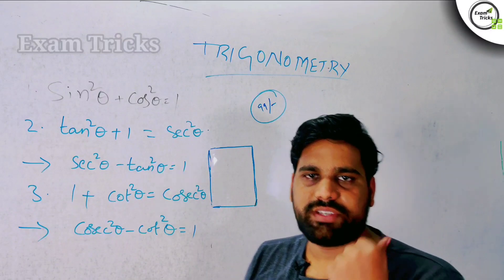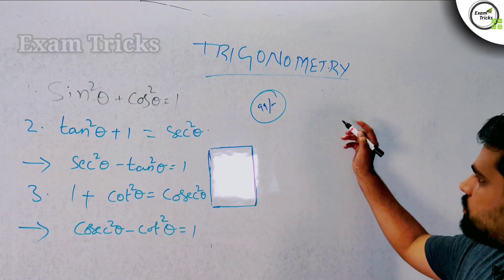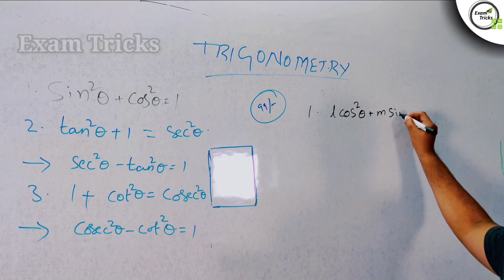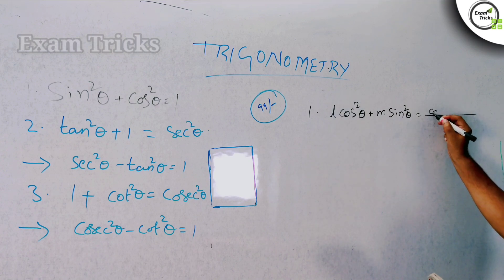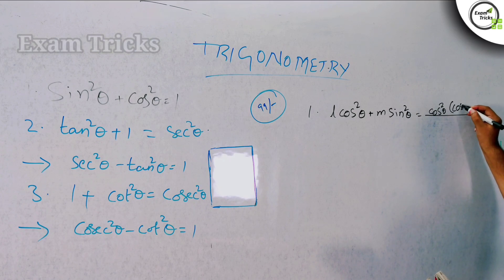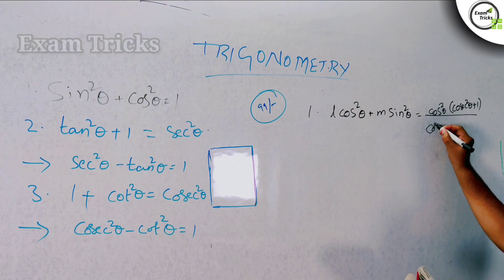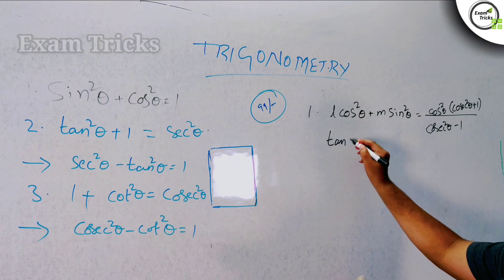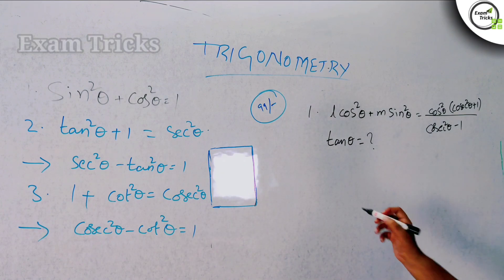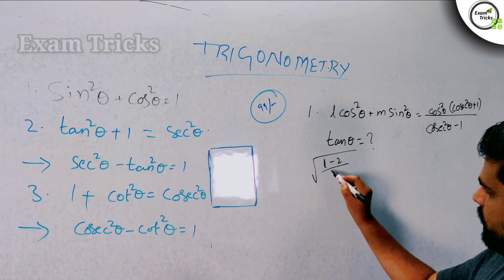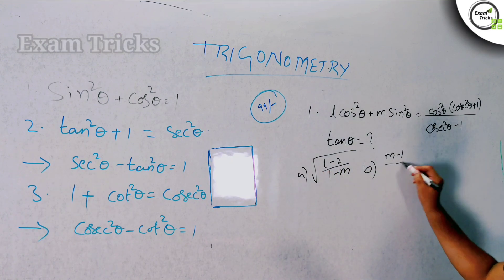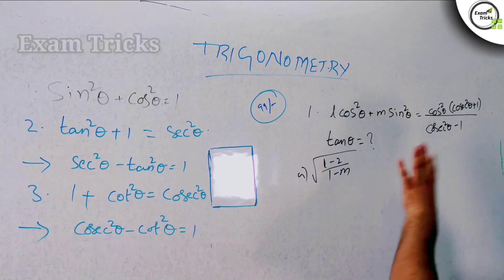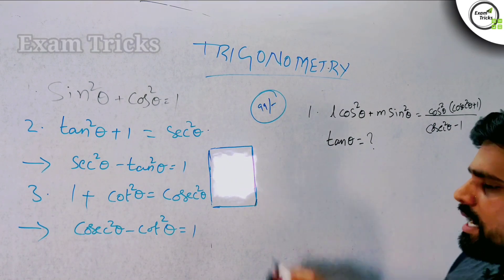Let's explain a twist. Here's a new question: L cos²θ plus m sin²θ equals cos²θ into cosec²θ plus 1 by cosec²θ minus 1. The options include answers like l minus 2 by 1 minus m, or m minus 1 by l minus 2. For these types of questions with multiple options, we can use the verification method — substituting a theta value to check which option is correct.